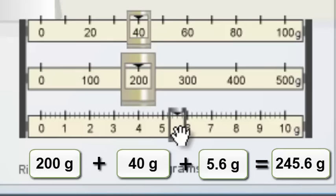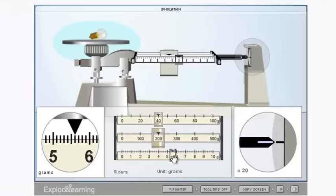That's how you use a triple beam balance and that's also how you use a graduated cylinder to find the volume of something. So those are the tools that we're going to be using and I hope this video was helpful.